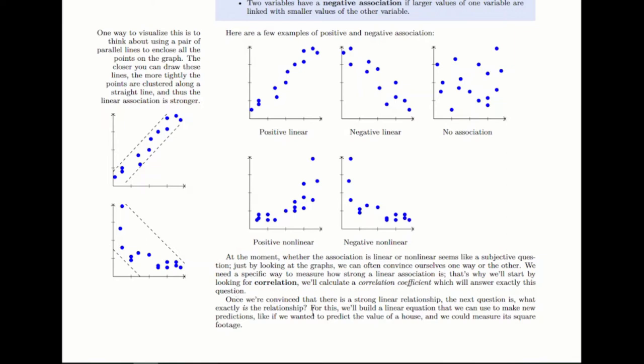And then once we've decided that there is a strong linear relationship, then we can find the equation that matches that. And again, this is the part that will be familiar from chapter two when we did linear models and especially linear regression. So that will be pretty familiar and won't take a lot of time to figure out.